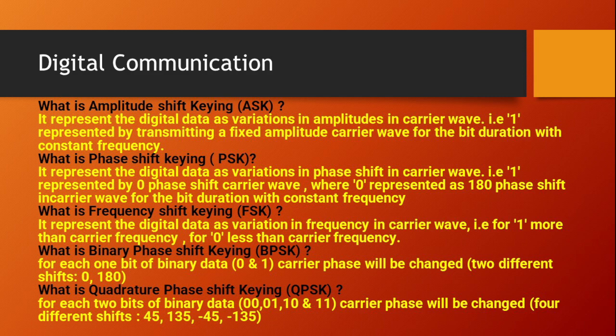Phase shift keying (PSK) represents the data as a variation in phase shift in the carrier wave — one is represented by zero phase shift and zero is represented by a 180 degree phase shift in the carrier wave for the bit duration with constant frequency. Frequency shift keying (FSK) represents the digital data as a variation in frequency in the carrier wave — for one, more than carrier frequency; for zero, less than carrier frequency.